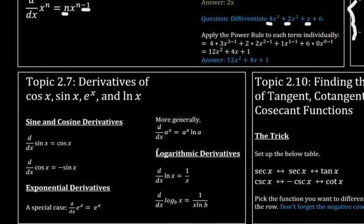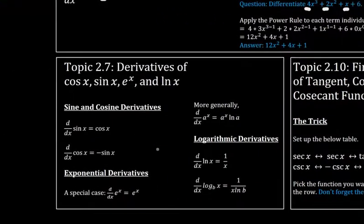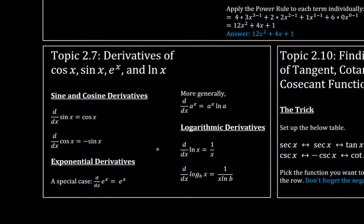And then topic 2.7 is an important topic as it shows you how to take other derivatives like sine, cosine, e to the x, and ln x. Sine and cosine derivatives are pretty easy to remember because they actually turn into each other when you differentiate each of them. But when you differentiate cosine, you have to tack on a negative sign. So sine turns into cosine, cosine turns into sine. But cosine, you have to tack on this negative sign. So cosine turns into negative sine.